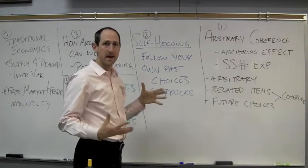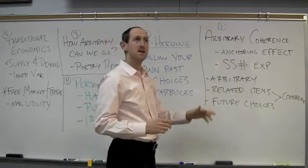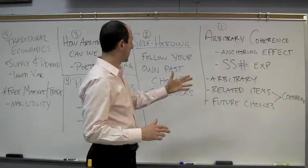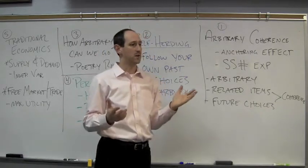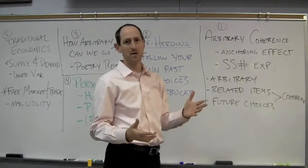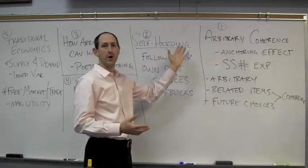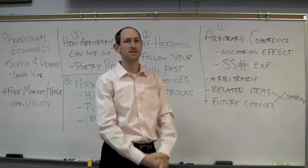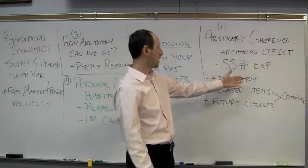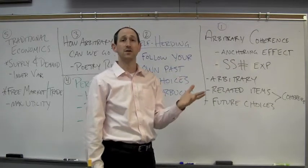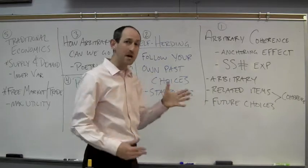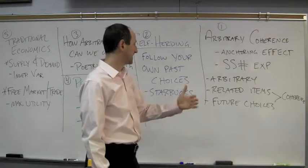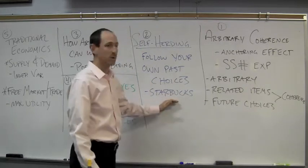The rest of the chapter explores the implications of this main idea. One is self-herding — a subtle version of arbitrary coherence. We often go to a restaurant because others suggested it, or see a movie because it's popular — that's herding behavior. With self-herding, you make an initial choice and if you had a good experience, you make that choice again. You become your own herd, lining up behind yourself.